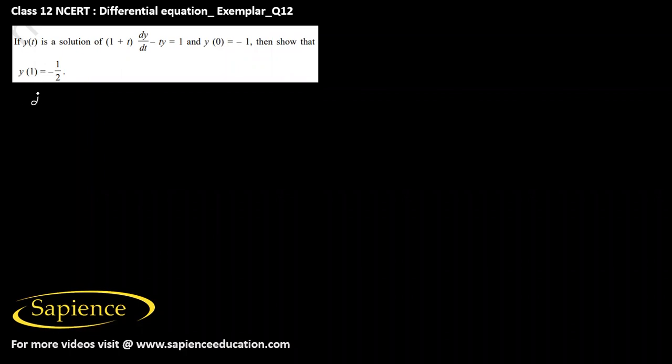It is given that y(t) is a solution of dy/dt minus t/(1+t) times y equals 1/(1+t), and at t equals 0, y equals minus 1. We need to find the function y(t).